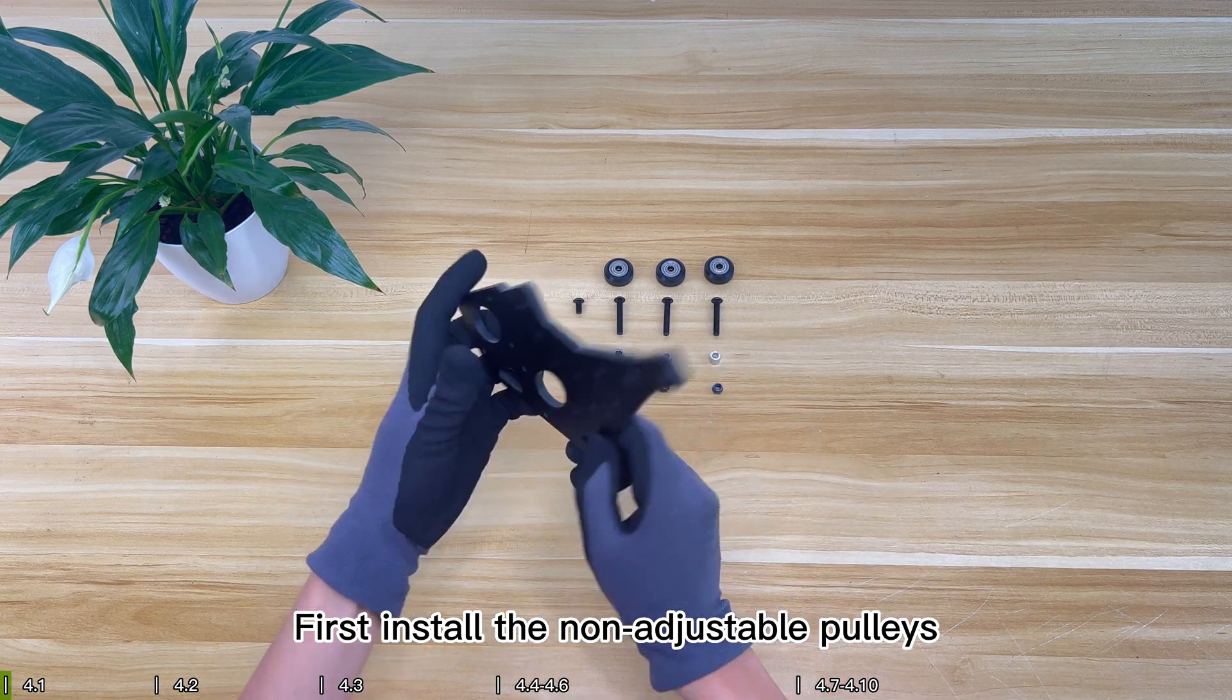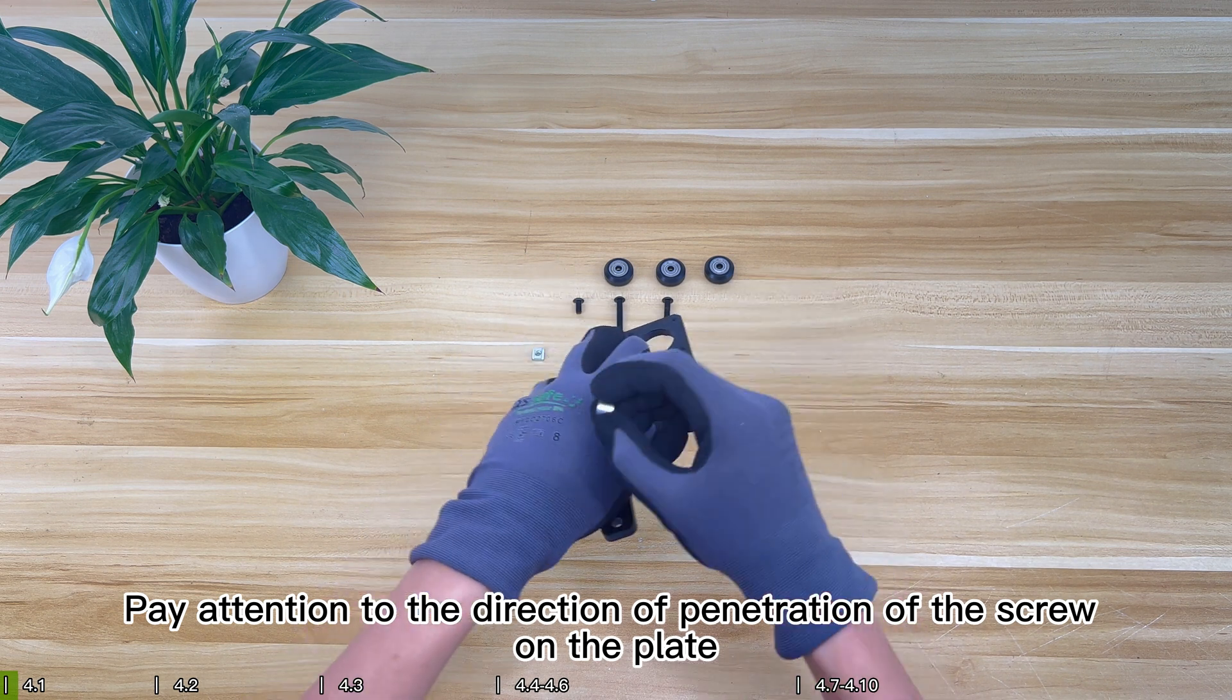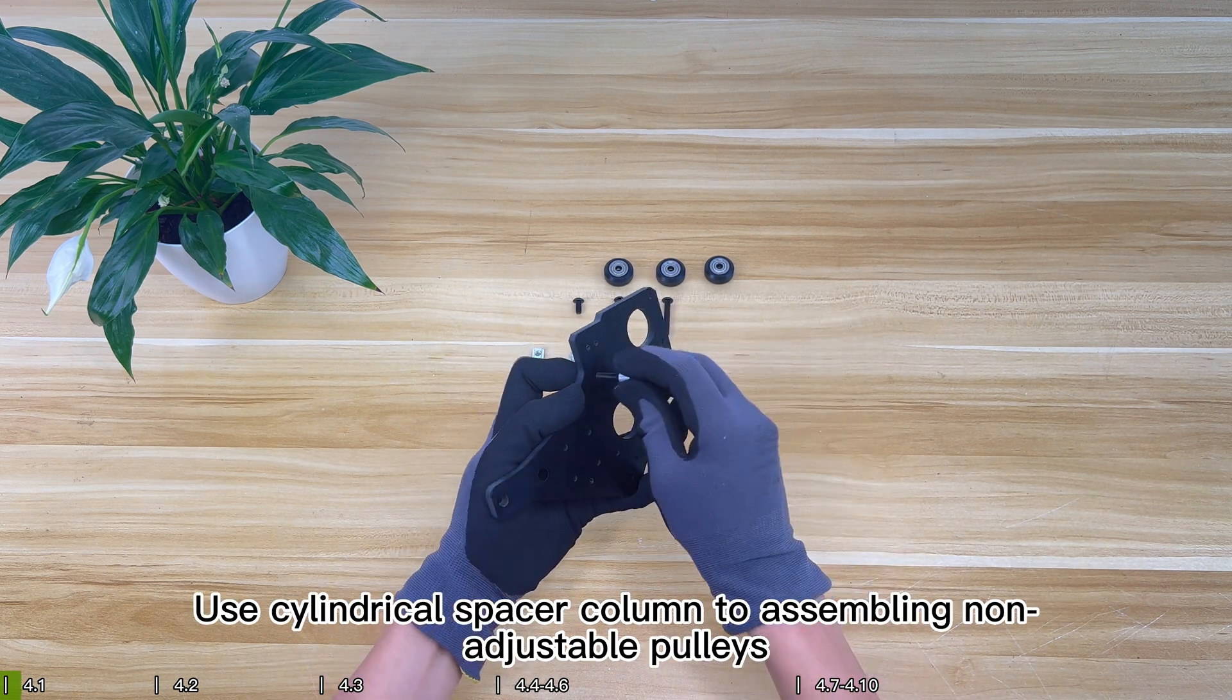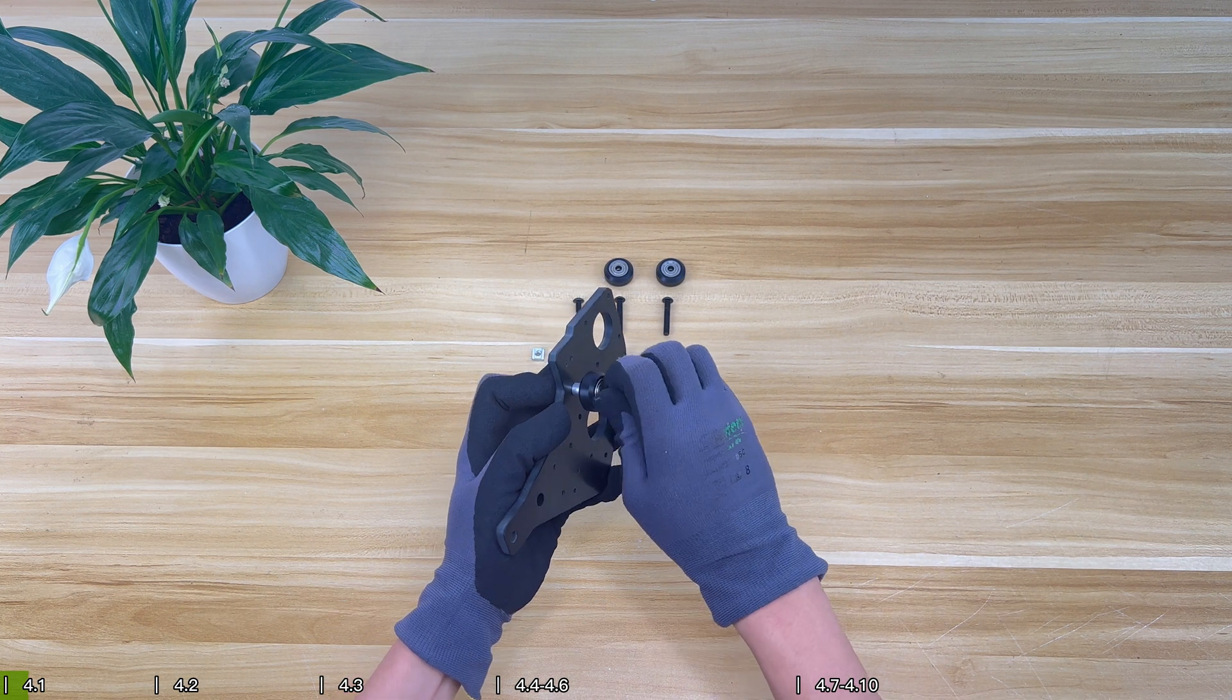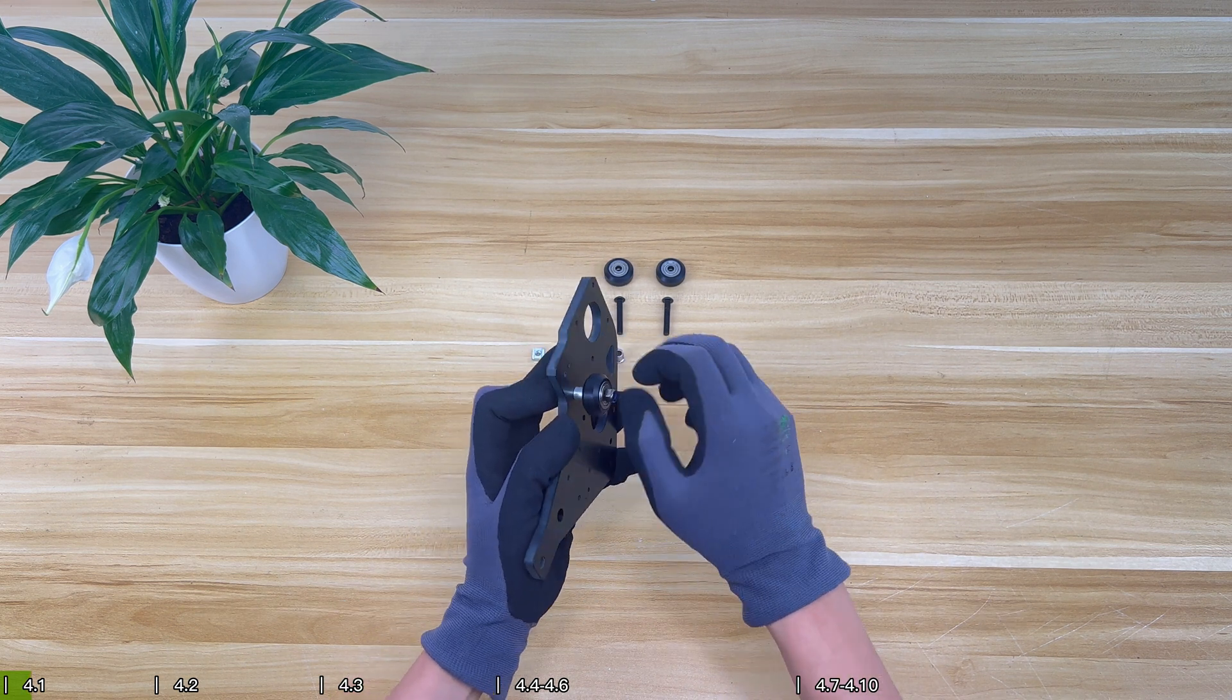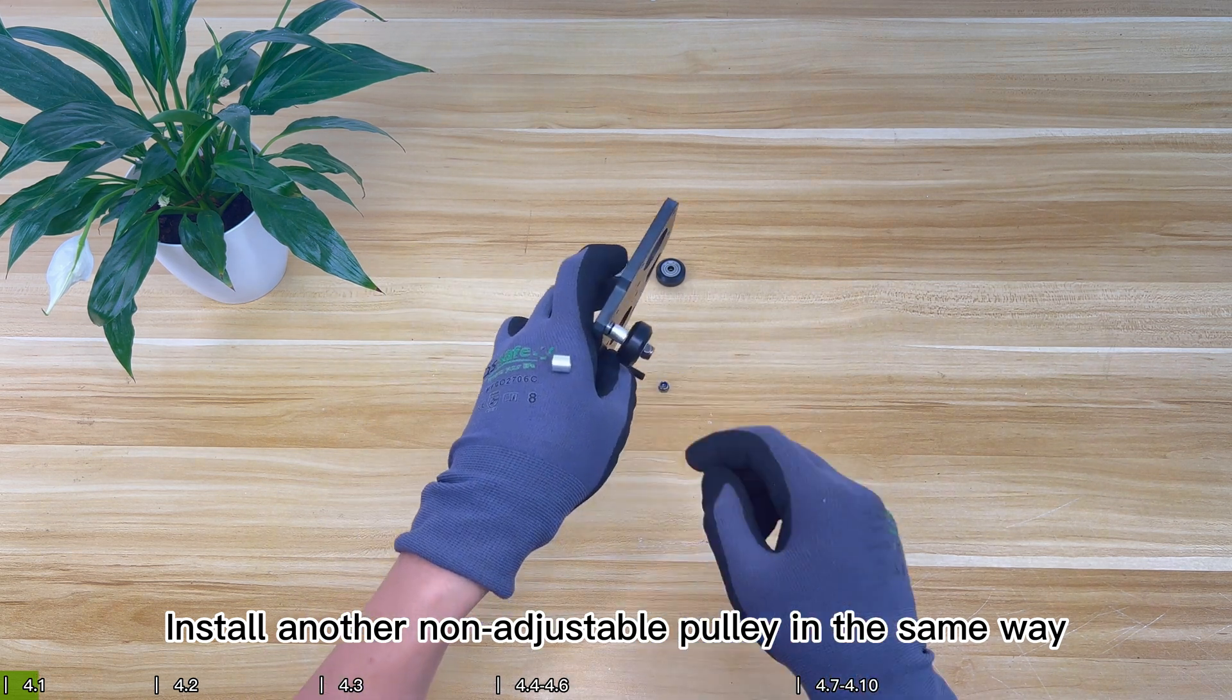First install the non-adjustable pulleys. Pay attention to the direction of penetration of the screw on the plate. Use cylindrical spacer column to assemble non-adjustable pulleys. Install another non-adjustable pulley in the same way.